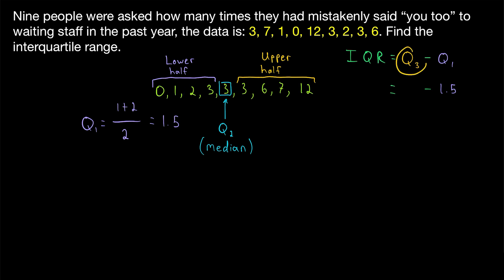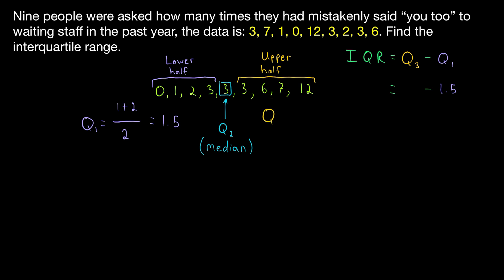Then we just have to find the third quartile, which is the median of the upper half of data. Again, this is an even number of data points, so to find the median of this upper half we take the average of the two numbers in the middle. The two numbers in the middle are six and seven. So the third quartile is the average of those two: six plus seven divided by two is 13 divided by two, which is 6.5.